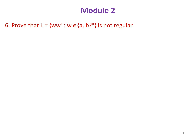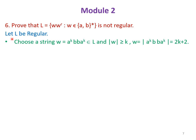Next question is to prove that the language {WW^R | W ∈ (a+b)*} is not regular. First, assume that the language is regular. Choose the string W = a^k b b a^k, where a^k b is W and b a^k is W^R, which belongs to this language. The length of this string is 2k+2, which is greater than k.